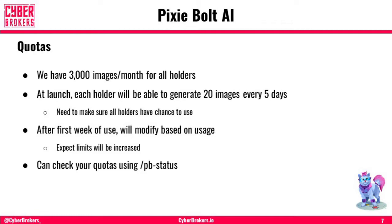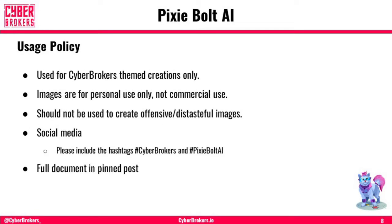This is a service we're paying for, so we do have a quota for Cyberbrokers, which is 3,000 images a month for all holders. At launch, we're going to set limits so each holder can generate 20 images every five days to make sure all holders have a chance to use it. After the first week of use, we will be modifying this based upon usage, and I expect those limits will go up. You can check your quotas using the PB dash status command — it'll show you how many you've used, how many you have, and the number of days involved.